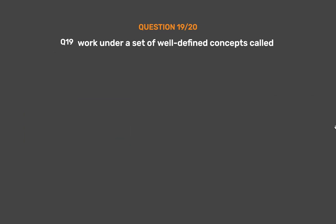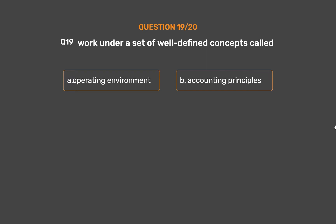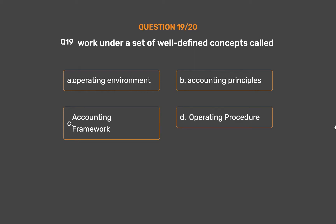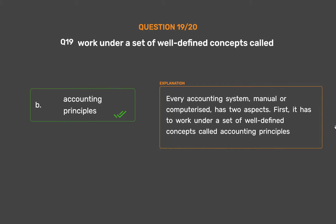Question number 19. Work under a set of well-defined concepts called: Option A: Operating environment. Option B: Accounting principles. Option C: Accounting framework. Option D: Operating procedure. The correct answer is Option B: Accounting principles. Every accounting system, manual or computerized, has two aspects. First, it has to work under a set of well-defined concepts called accounting principles.